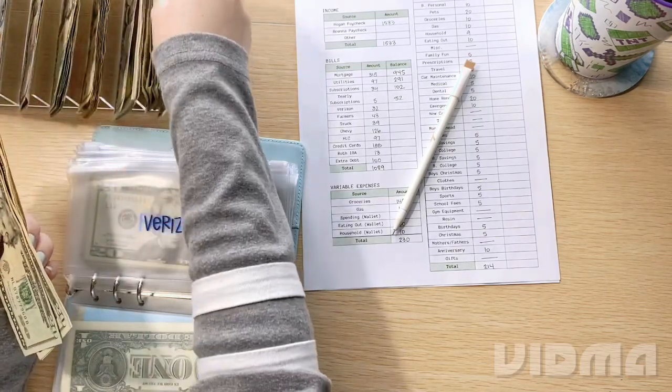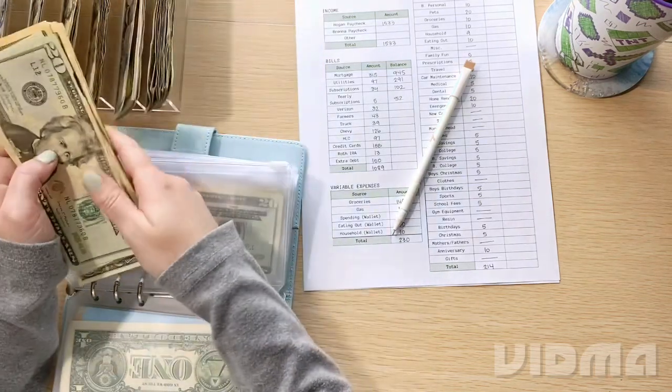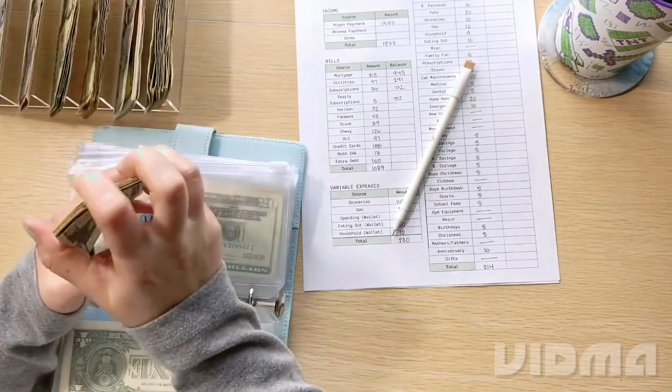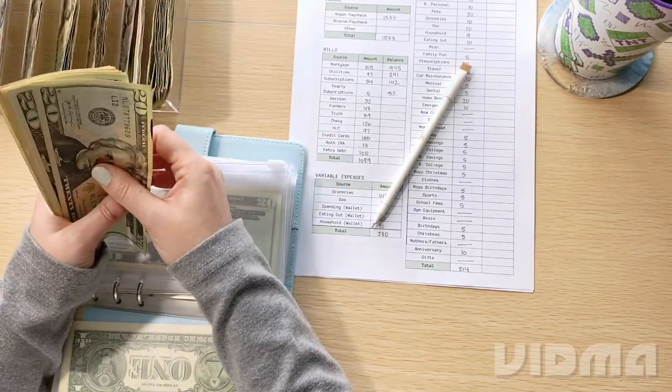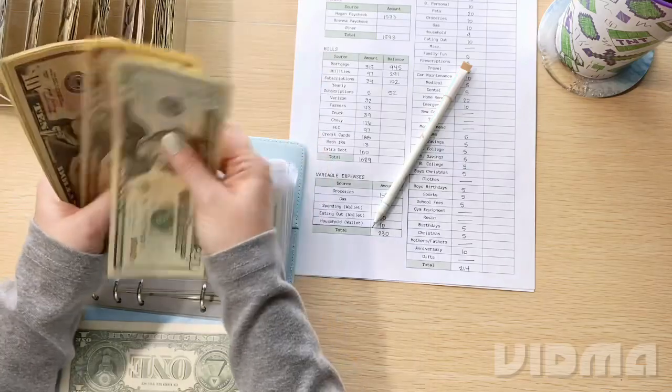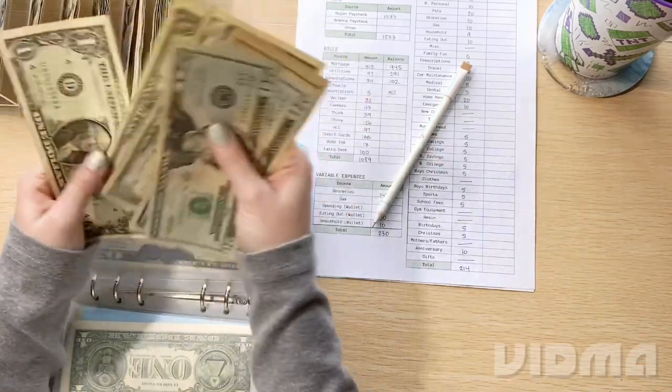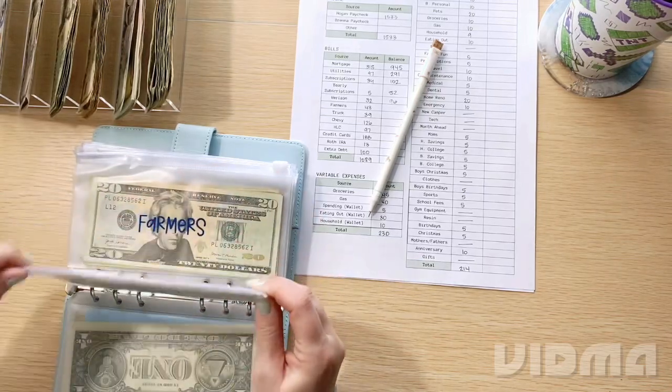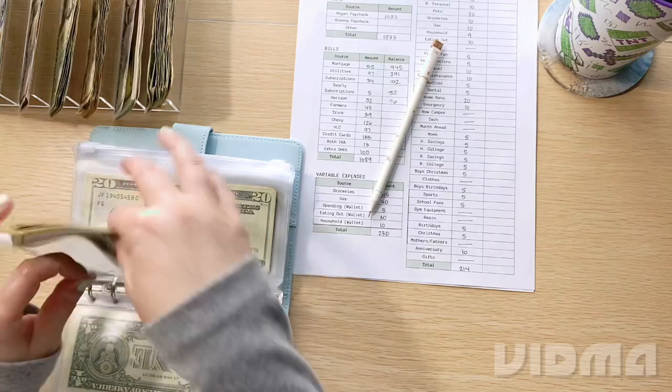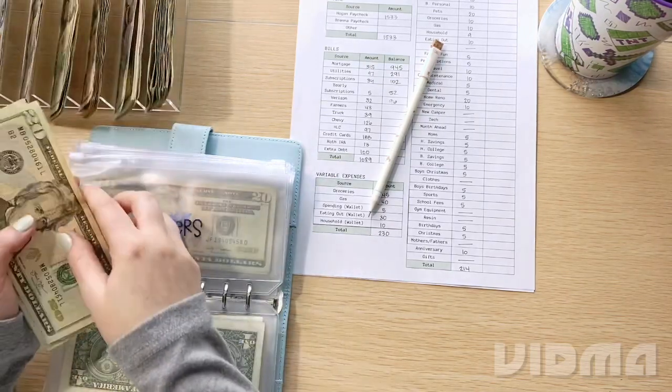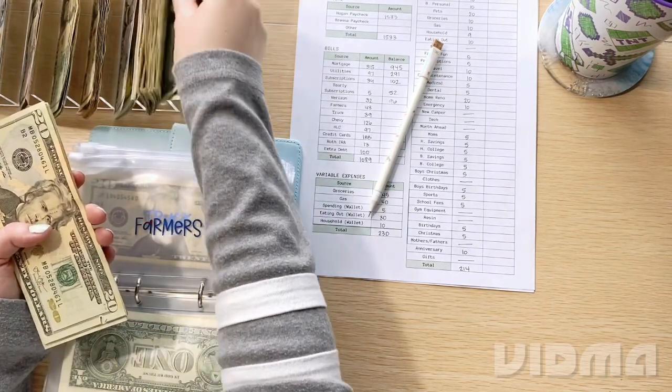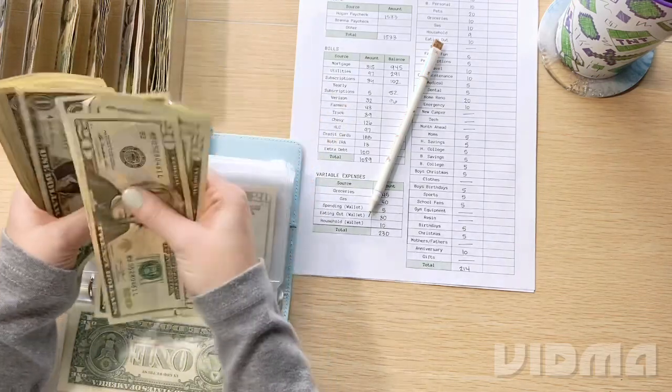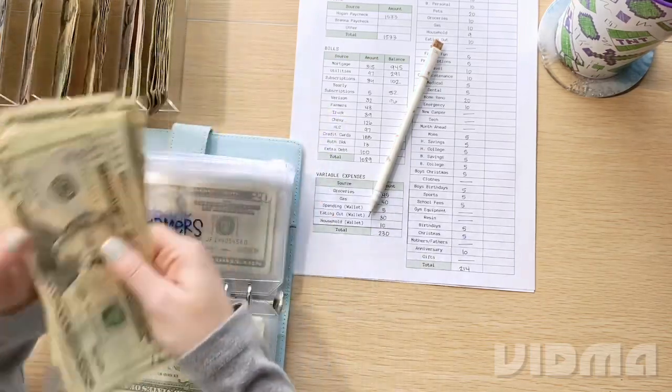Verizon is getting $32 today. I keep getting text messages from Verizon, it seems like almost at least once a week, offering me upgrades to my phone if I add another line or something like that. And it's just like, I'm not going to do it guys. Verizon has $96. Farmers, which is our car insurance, is getting $43. So now farmers has $129.